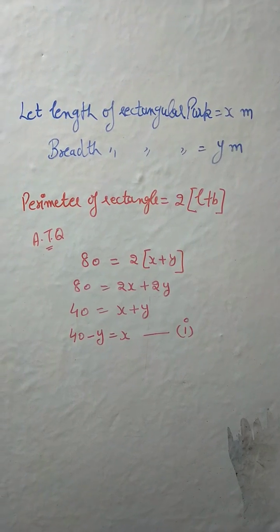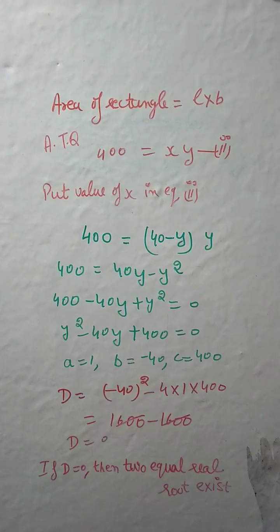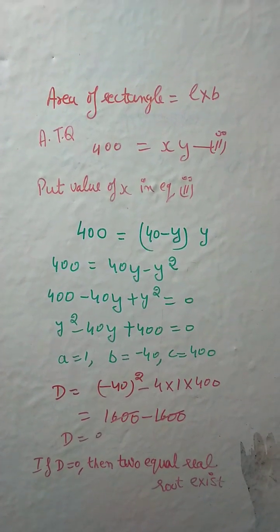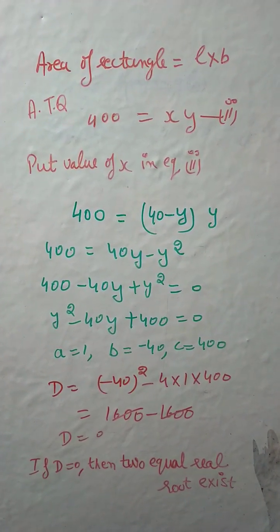Now area of rectangle is length times breadth: 400 = xy. Put the value of x in equation number 2. We get y² - 40y + 400 = 0. This is the quadratic equation.